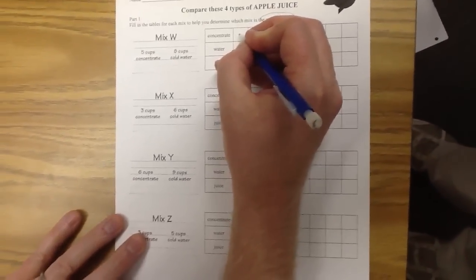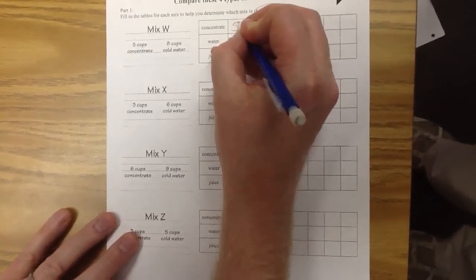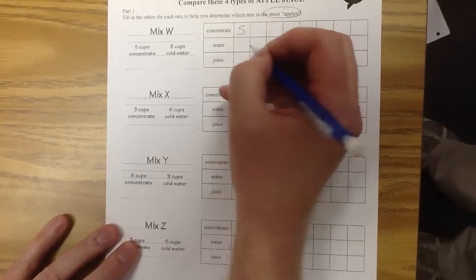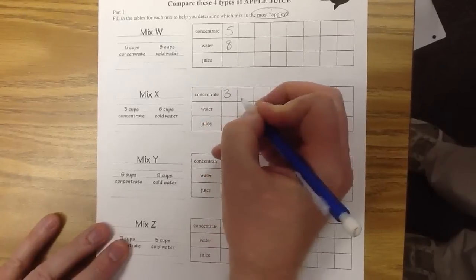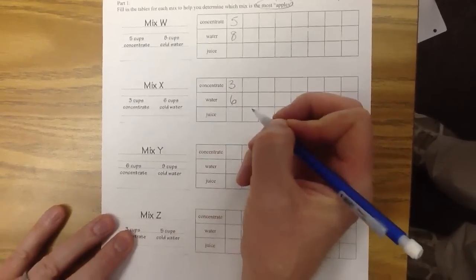So let's start out by filling in the base ratios for each mix. Mix W had 5 cups of concentrate, 8 cups of water. Mix X, 3 cups of concentrate, 6 cups of water.